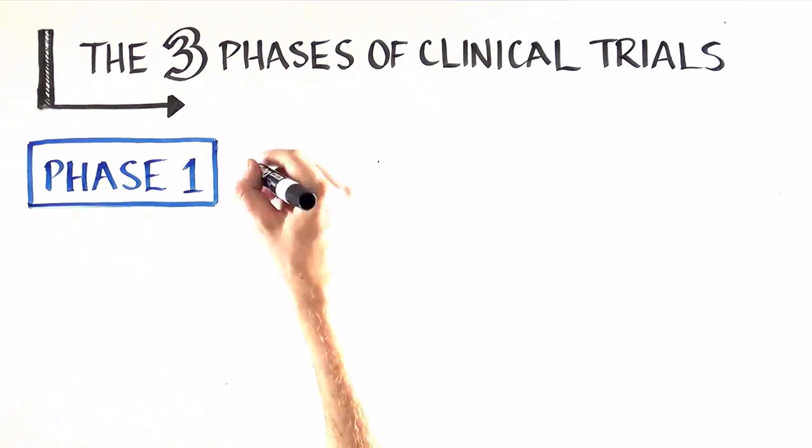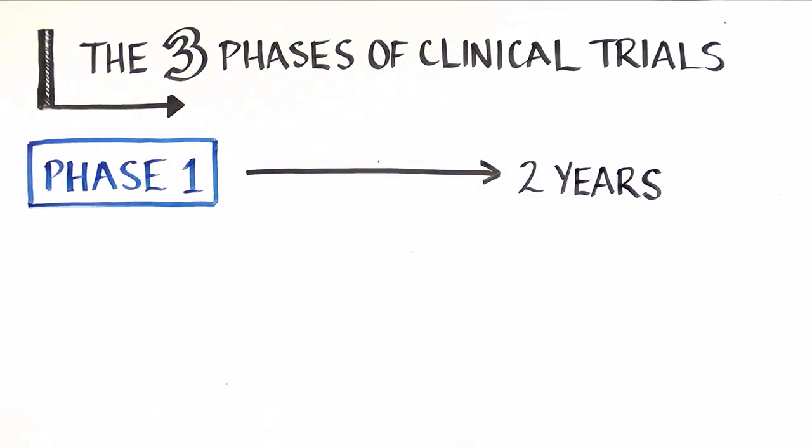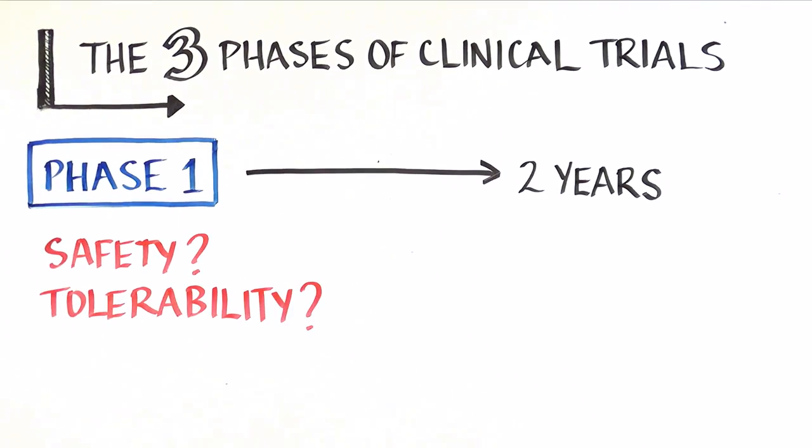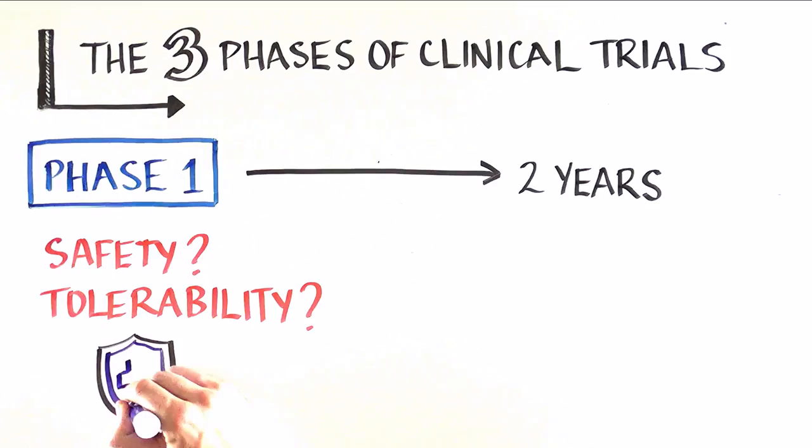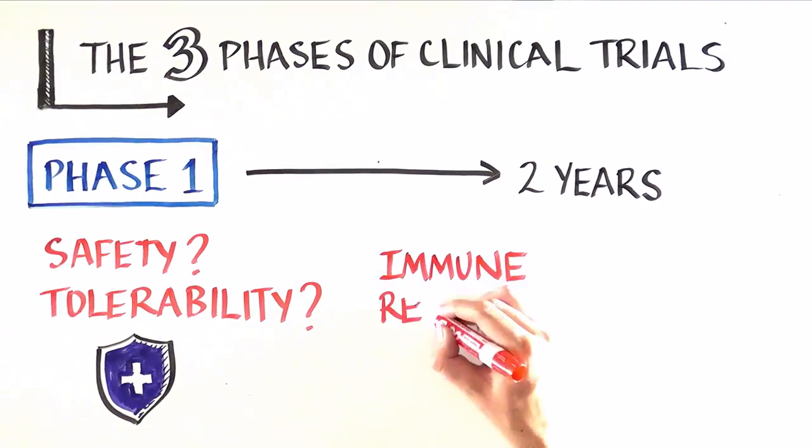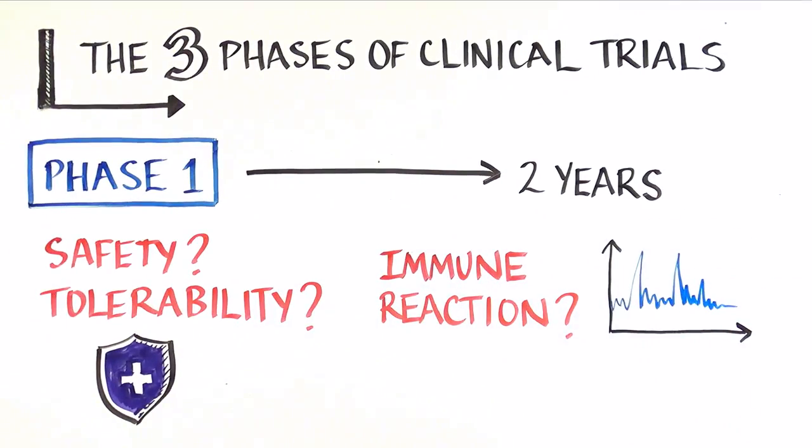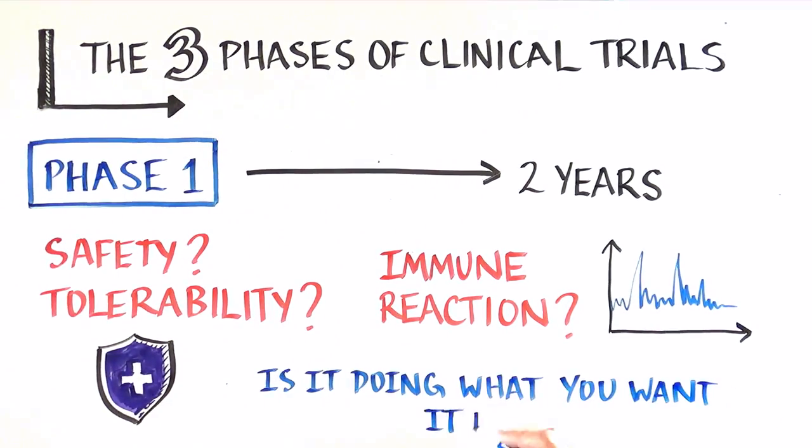Phase 1 trials, which can last up to two years, compares the safety—does the vaccine cause any side effects—and tolerability—does the injection hurt, and for how long. In this phase of studies, scientists are also gathering information about the body's immune response to the vaccine to see whether it is a promising approach to preventing that specific infection. Phase 1 trials do not determine whether or not the study product is actually doing what we hope it will do.